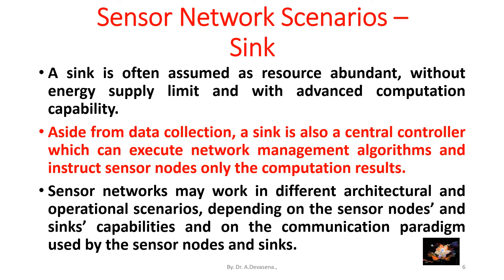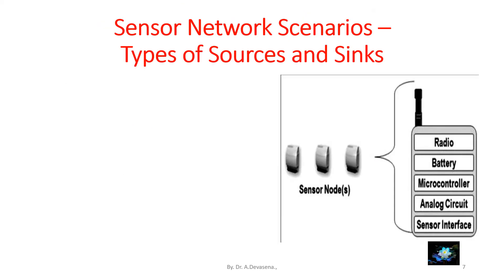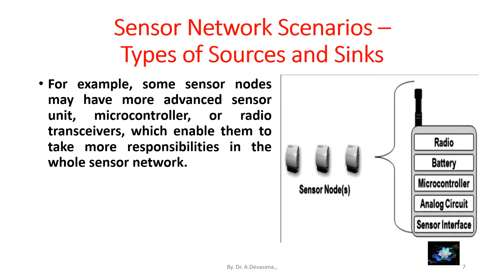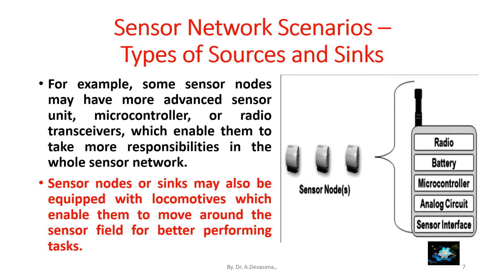Sensor networks may work in different architectural and operational scenarios depending on the sensor nodes and sinks' capabilities and on the communication paradigm used by the sensor nodes and sinks. For example, some sensor nodes may have more advanced sensor units, microcontrollers, or radio transceivers, which enable them to take more responsibilities in the whole sensor network.